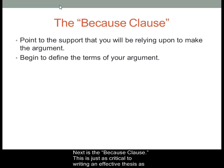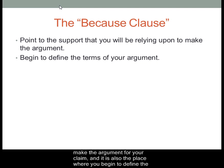Next is the Because Clause. This is just as critical to writing an effective thesis as the claim is. This is the place where you can point to the support that you will be relying upon to make the argument for your claim, and it is also the place where you begin to define the terms of your argument. The Because Clause begins to answer the question of why your claim is valid.